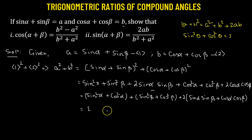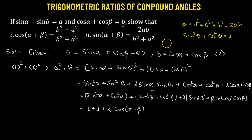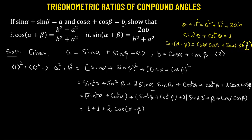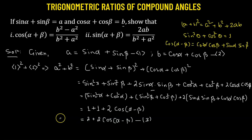Similarly, sine squared beta plus cosine squared beta equals 1, plus 2 times sine alpha sine beta plus cosine alpha cosine beta. Now, sine alpha sine beta plus cosine alpha cosine beta is nothing but cosine of alpha minus beta — that is a standard identity. So we now have 2 plus 2 times cosine(α − β). Let's label this as equation 3; this is the value of a² + b².